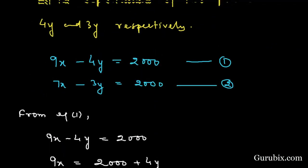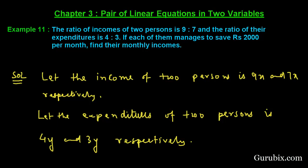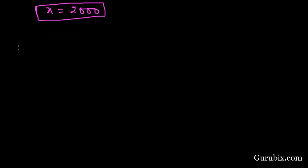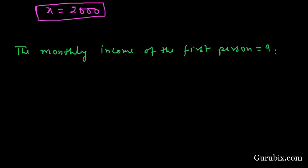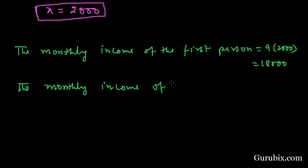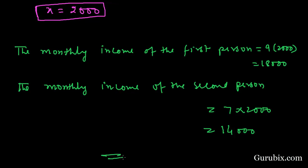Now we have the values of both x and y and can find what the question is asking. The monthly income of the first person equals 9 times 2000, which means rupees 18,000. The monthly income of the second person equals 7 times 2000, which means rupees 14,000. So this is the solution of the question. Thank you.